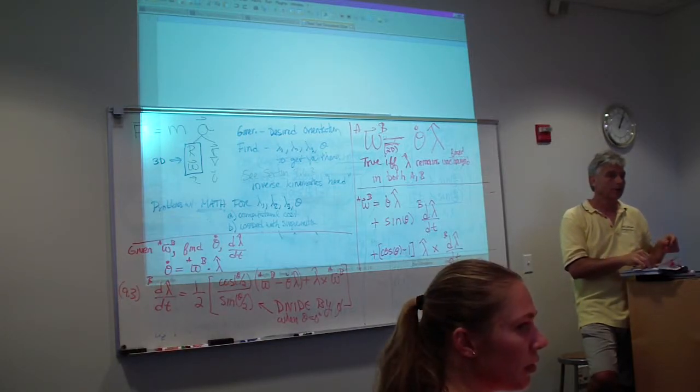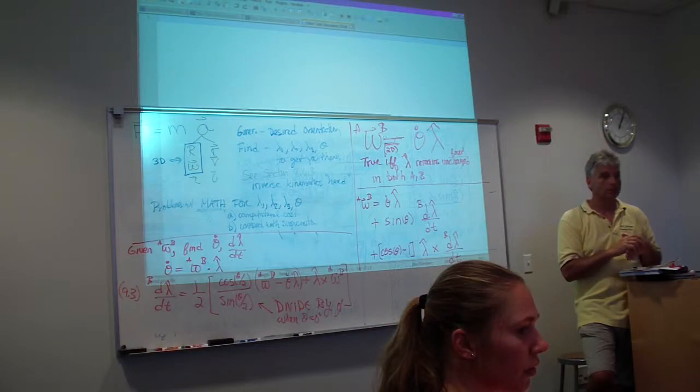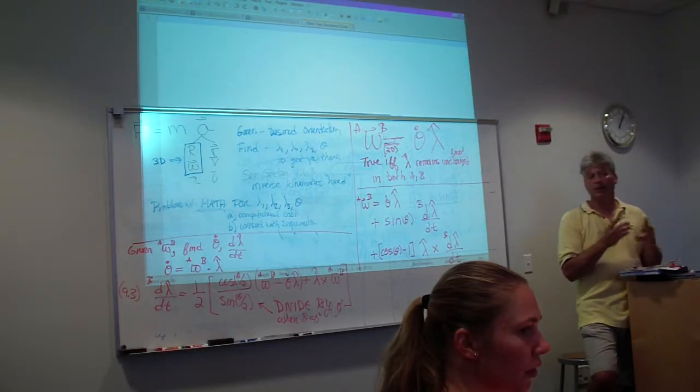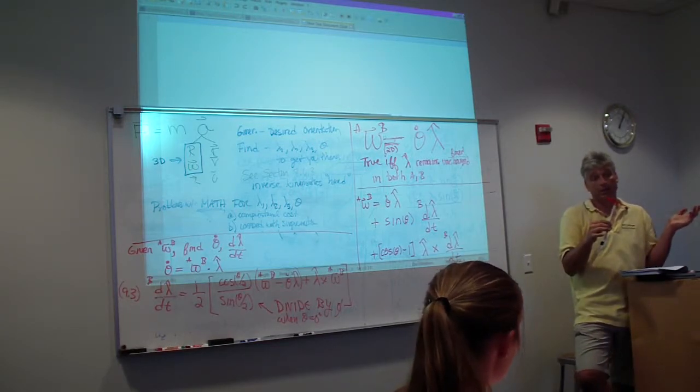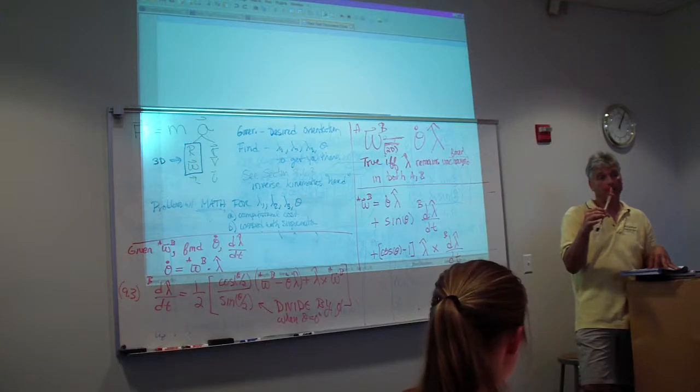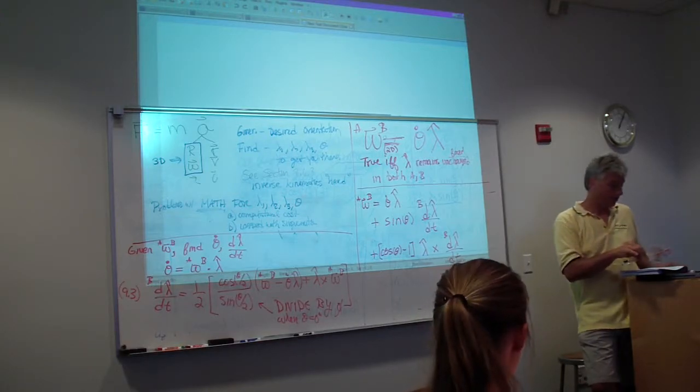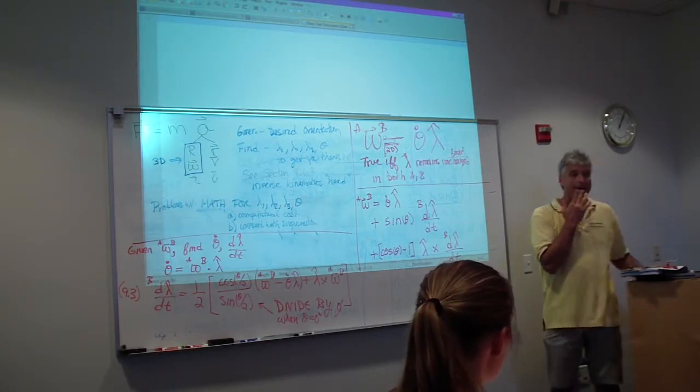So you're basically going back using these formulas to get back to what the angle was and what the lambda vector was? Yep. Okay. And typically, once you get to the rotation matrix, most people are just happy with it because it tells you exactly where everything is. Yeah, good question.